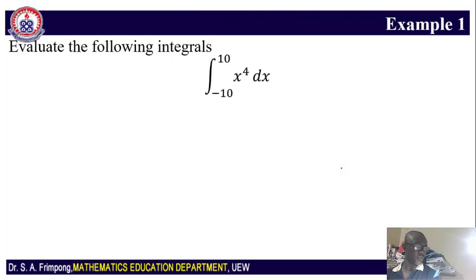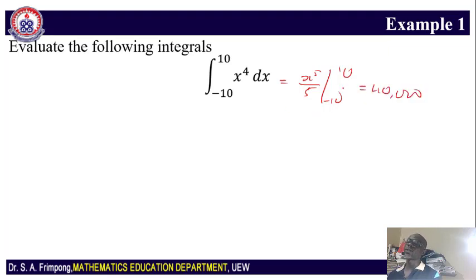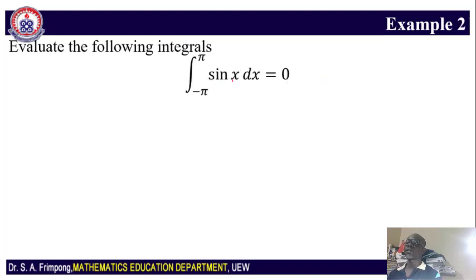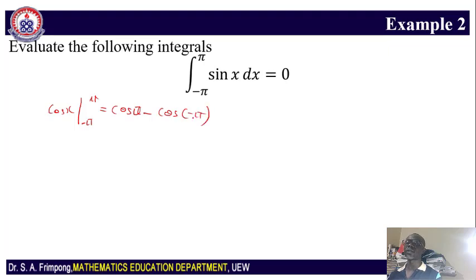If we take x⁵, that's an even function, so the integral of x⁵ over 5 from negative 10 to 10 is going to give you 40,000 if you work it out. Now sin(x) is an odd function, so you get 0. If you integrate sin(x), you get cos(x), and we are taking this from negative π to π. If you put in the limits, you get cos(π) minus cos(negative π). But cosine is an even function, so cos(negative π) = cos(π), giving cos(π) minus cos(π), which equals 0.